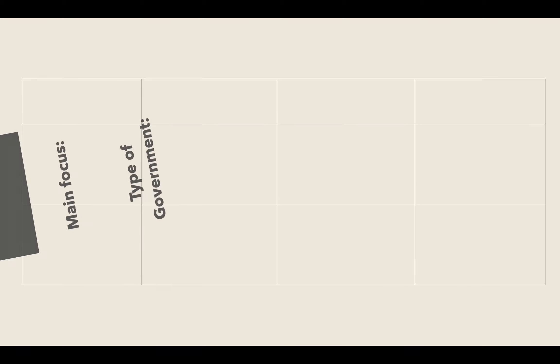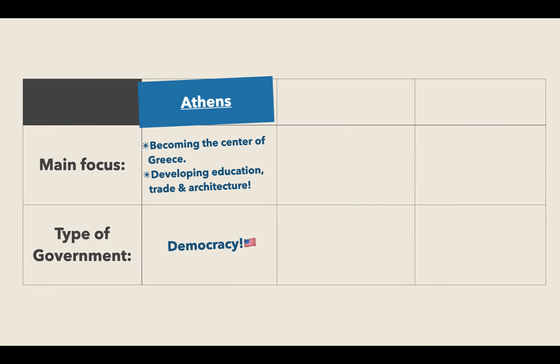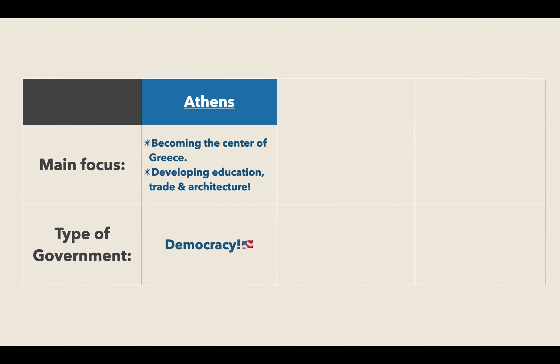If we take a look at the chart, the first place that we talked about was the ancient Greek city-state of Athens. Athens was one of the most powerful city-states in ancient Greece. It actually becomes the center of ancient Greek culture and education for a very long time due to the fact that it was able to create a lot of allies and a lot of power. Like many other city-states, its main focus was becoming the center of society, and they did focus on developing the educational systems and the architecture of ancient Greece.